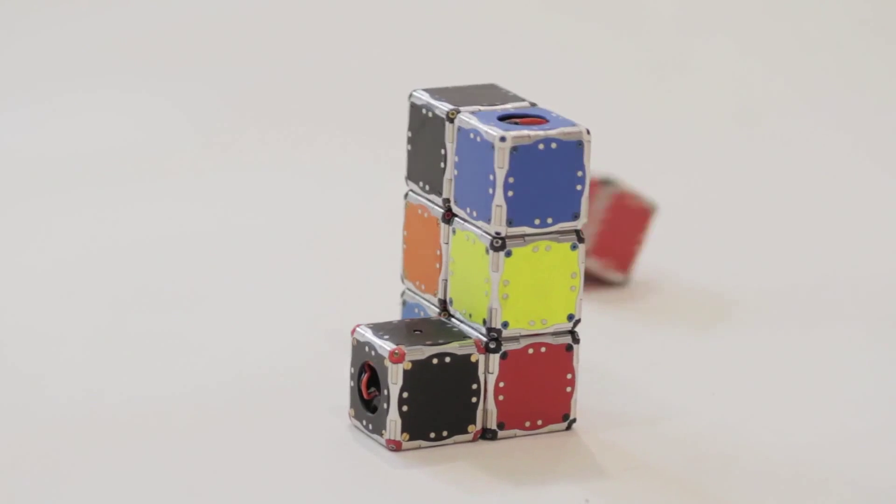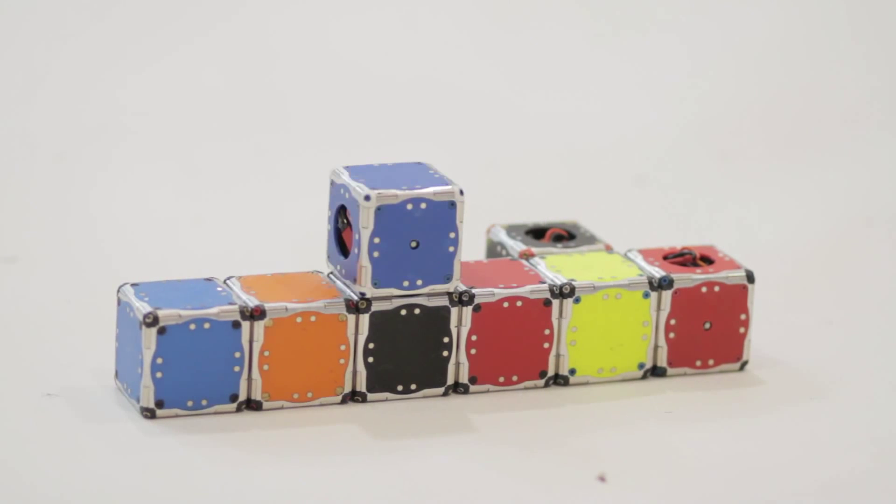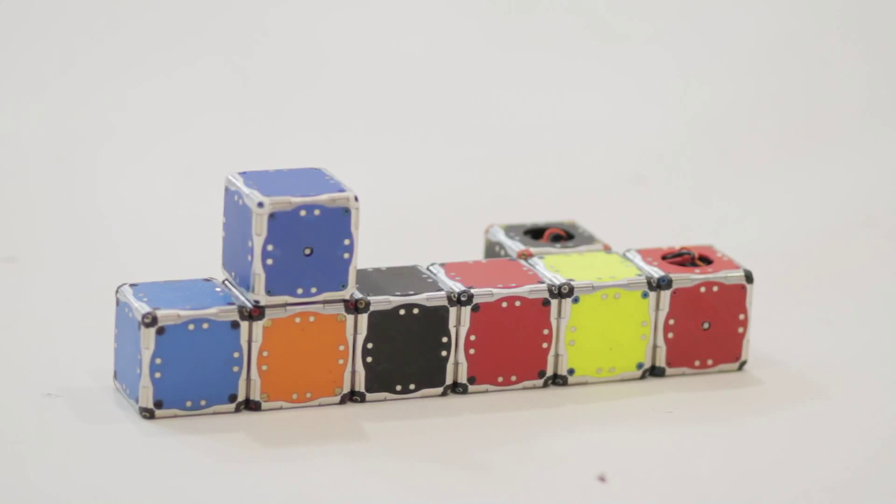In our robot, we found it kind of an accident that they're able to jump. We weren't intending to do that, but it ends up that we need enough momentum inside each cube in order to move on a lattice structure, which is what we intended.